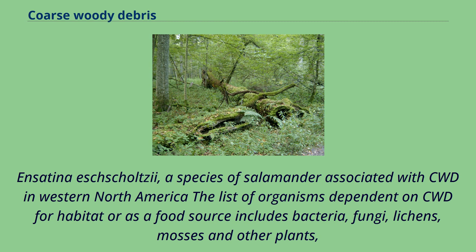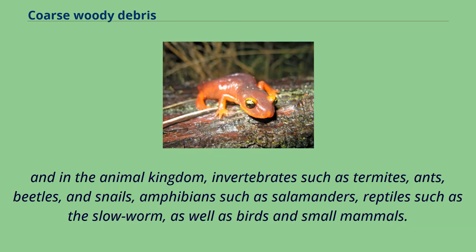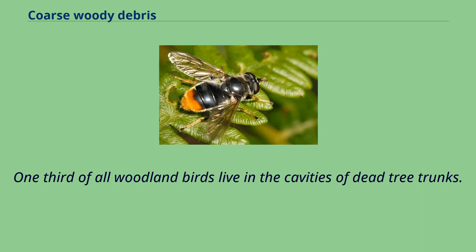The list of organisms dependent on CWD for habitat or as a food source includes bacteria, fungi, lichens, mosses and other plants, and in the animal kingdom invertebrates such as termites, ants, beetles, and snails, amphibians such as salamanders, reptiles such as the slowworm, as well as birds and small mammals. One-third of all woodland birds live in the cavities of dead tree trunks. Woodpeckers, tits, chickadees, and owls all live in dead trees, and grouse shelter behind woody debris.